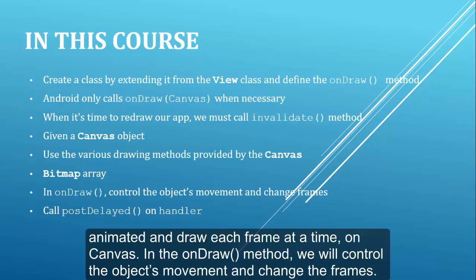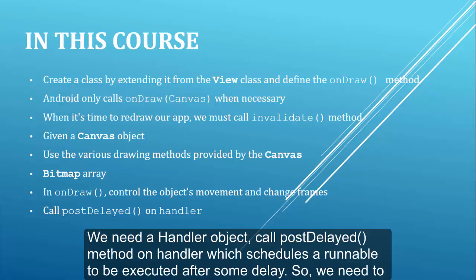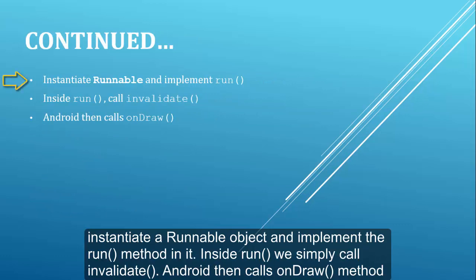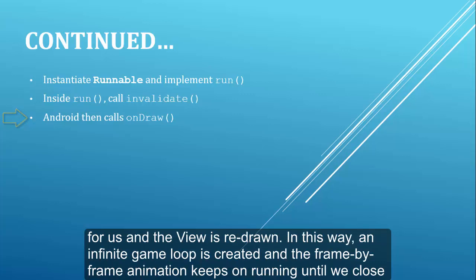We draw each frame at a time on the canvas in the onDraw method, where we control the object's movement and change the frames. We need a handler object and call the postDelayed method on the handler, which schedules a runnable to be executed after some delay. We instantiate a runnable object and implement the run method in it. Inside run we simply call invalidate, Android then calls onDraw for us, and the view is redrawn. In this way an infinite game loop is created and the frame by frame animation keeps running until we close the app.